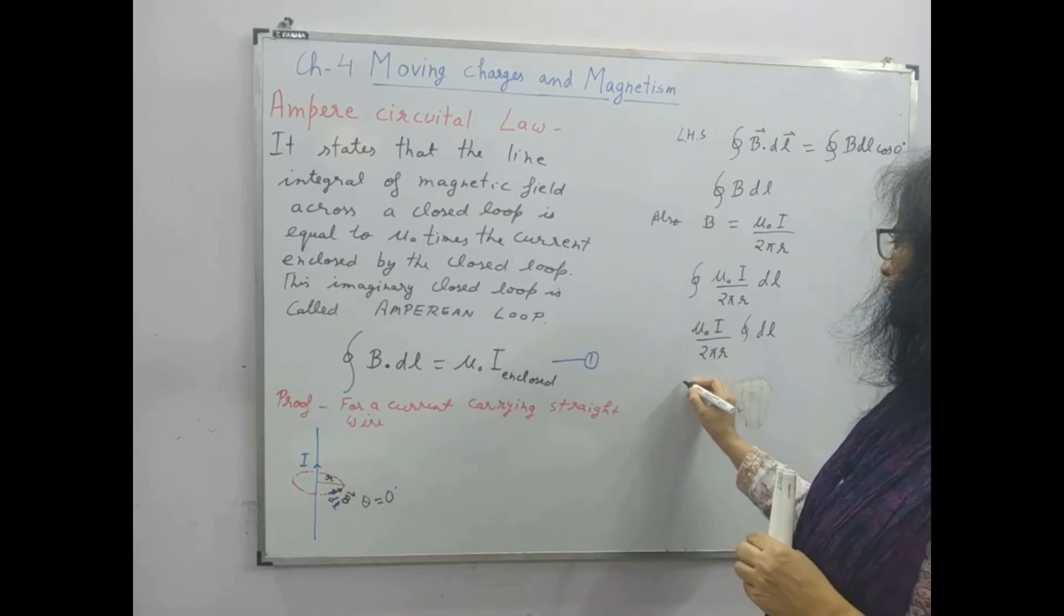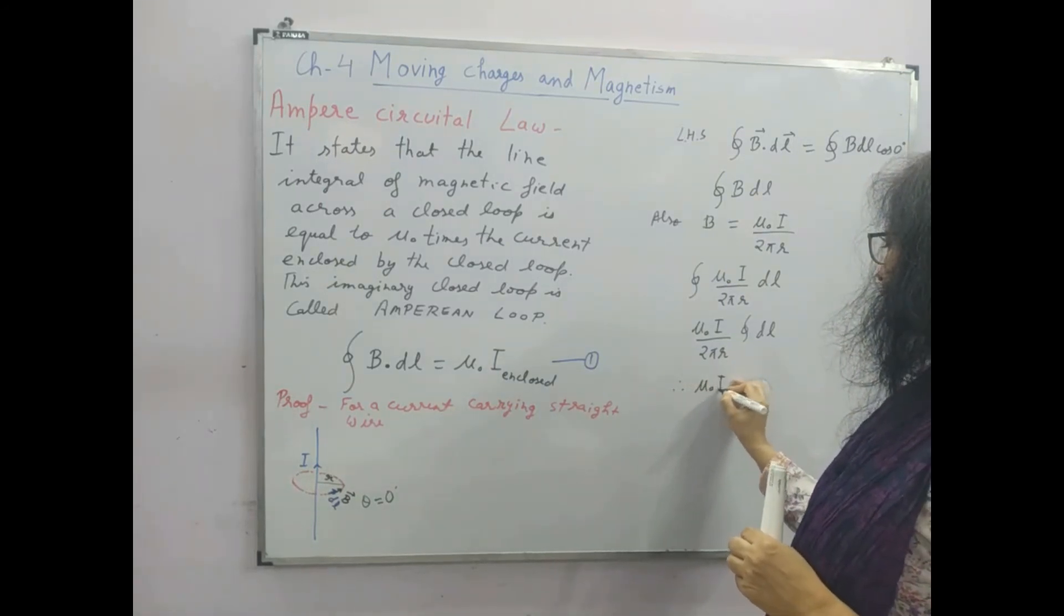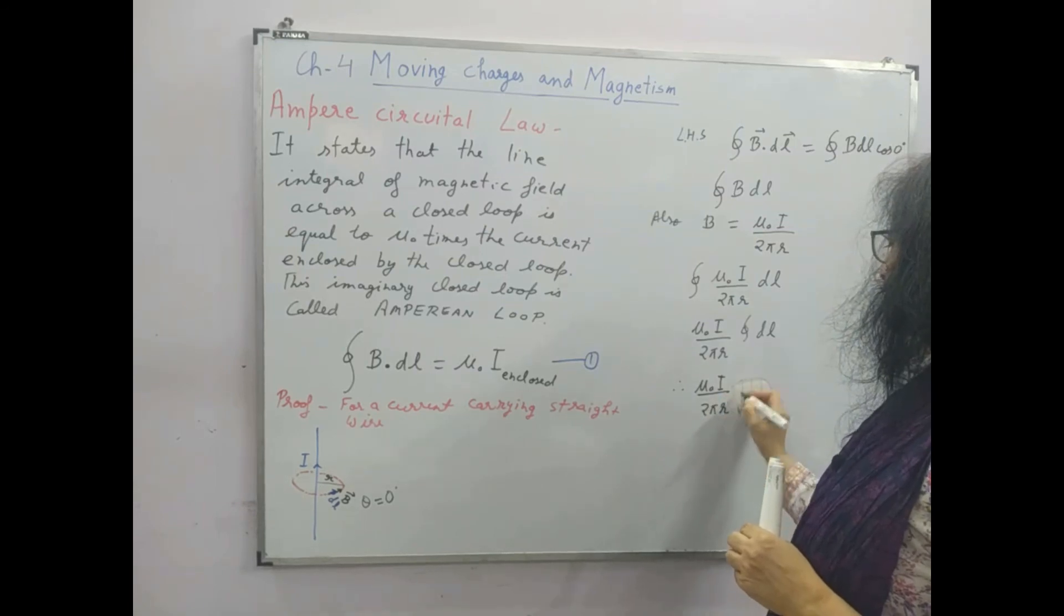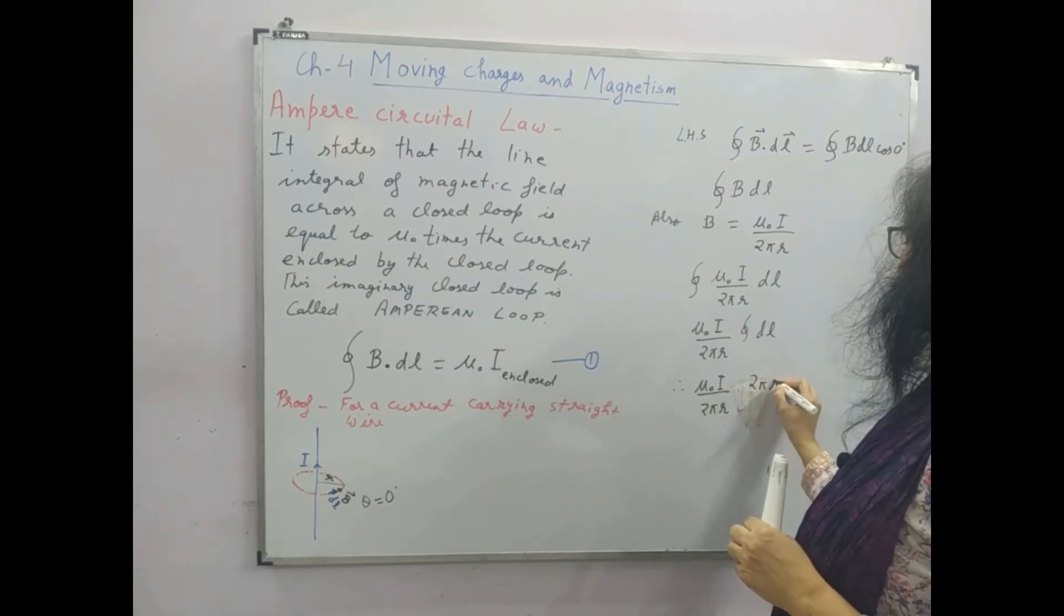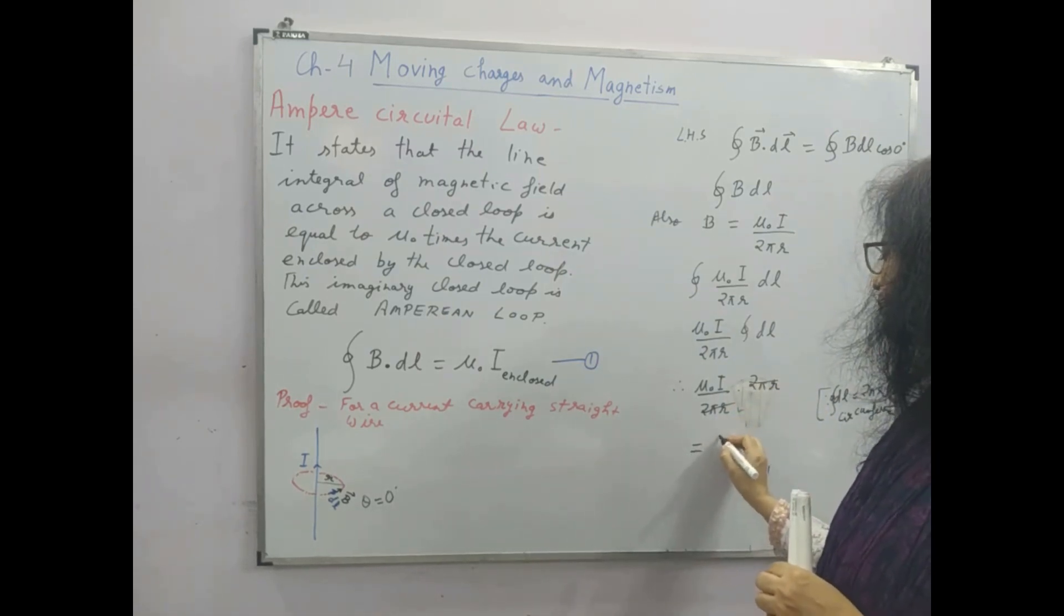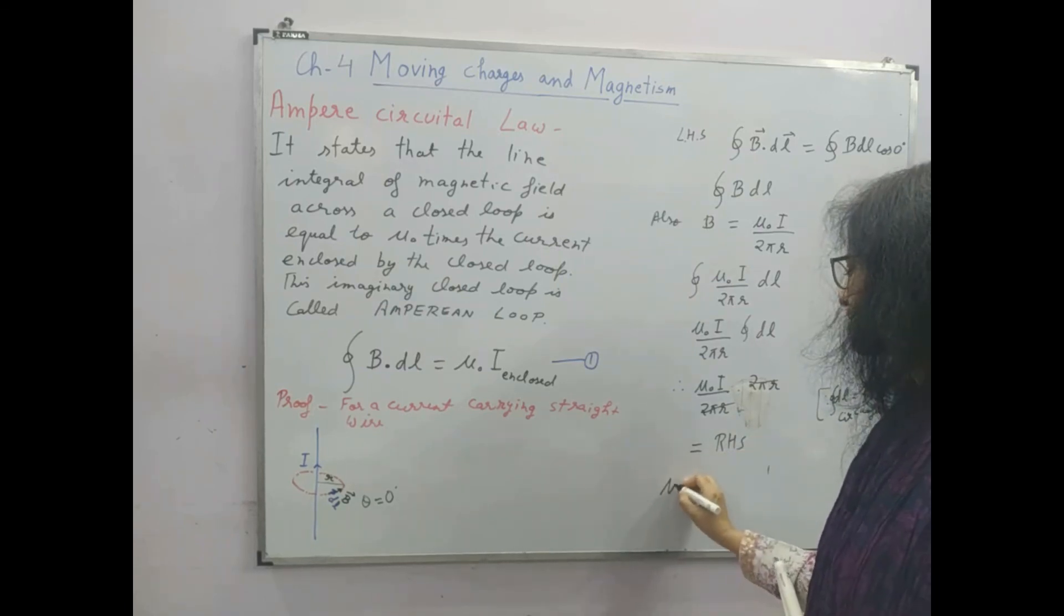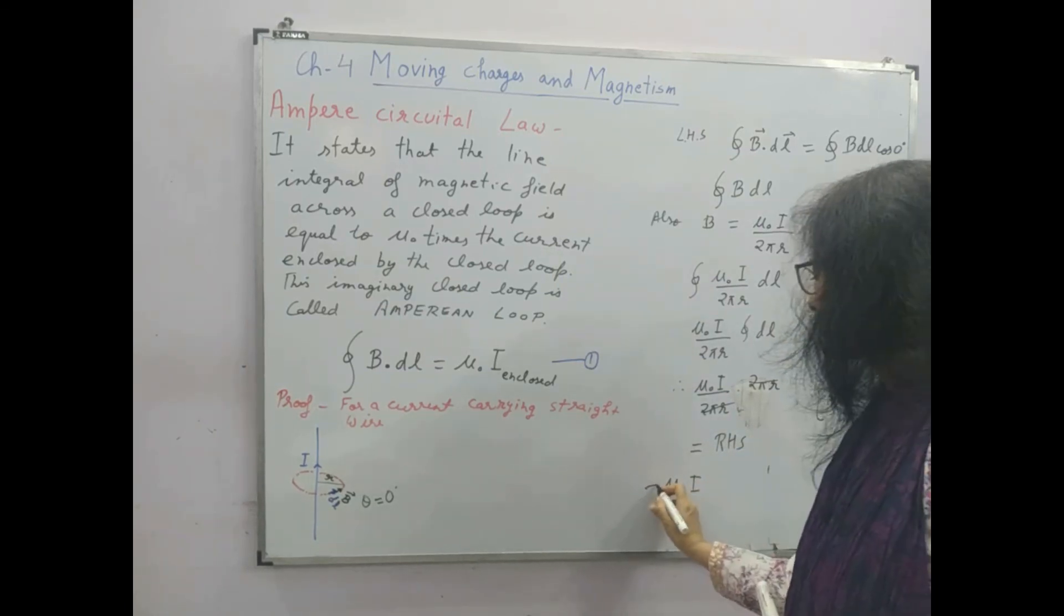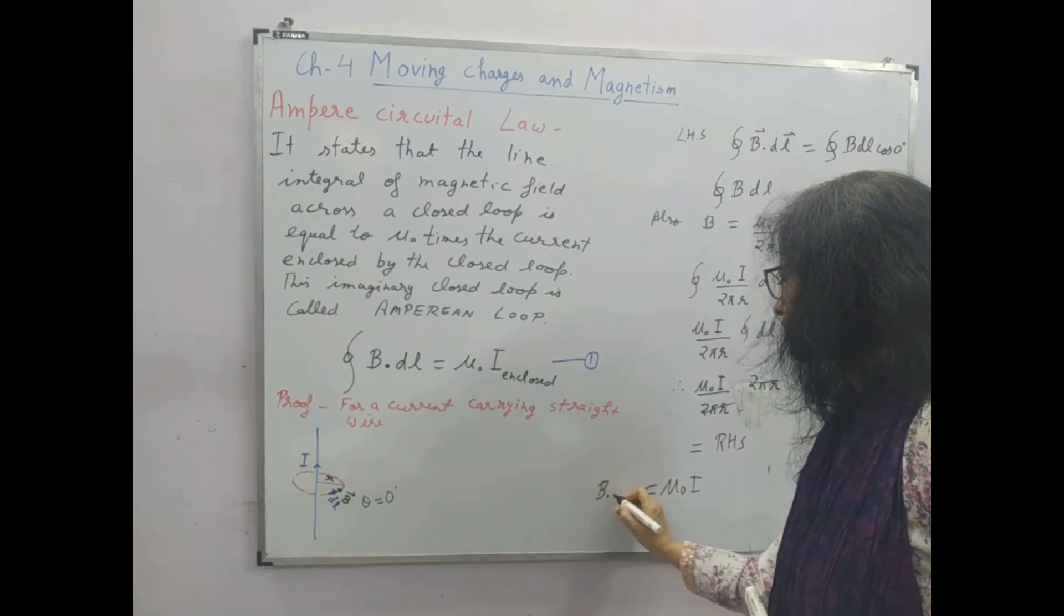So this we can write mu 0 i upon 2 pi r into 2 pi r. Since dl integration is equal to 2 pi r, that is circumference, so this will be cancelled and this is equal to... that means mu 0 i is equal to b dot dl.